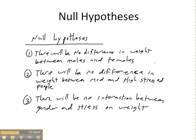When doing a 2x2 factorial design and analyzing data with ANOVA, you don't really get to pick your null hypotheses — they're a given. For our factor of gender, the null hypothesis is no difference. For our factor of stress, the null hypothesis is no difference. And for a possible interaction between gender and stress, the null hypothesis is no interaction. So null hypotheses are all about no difference and no interaction.